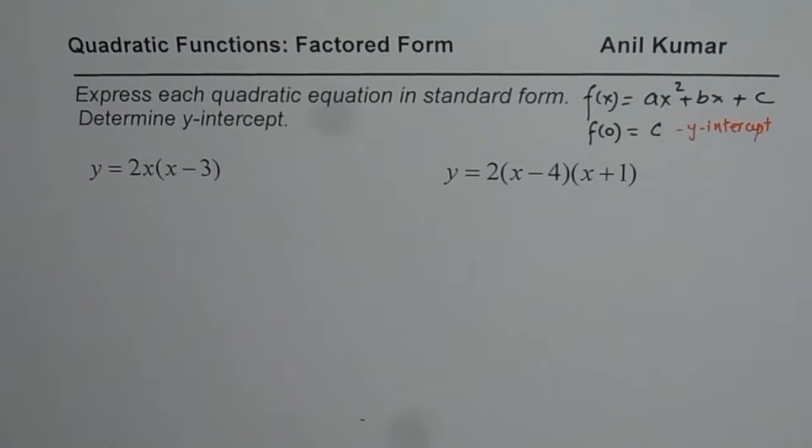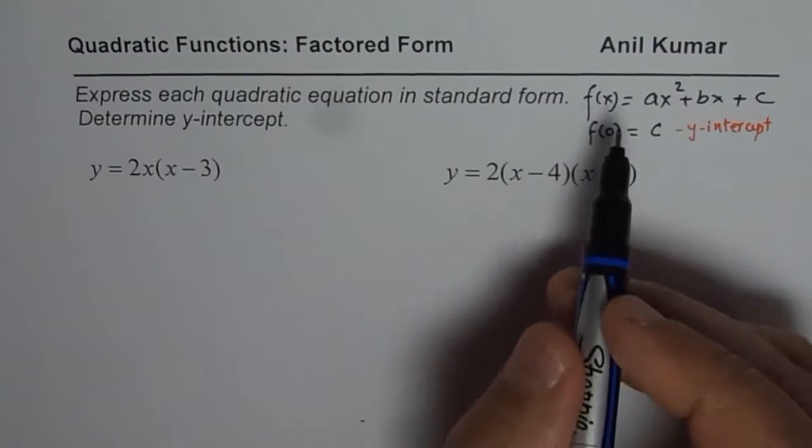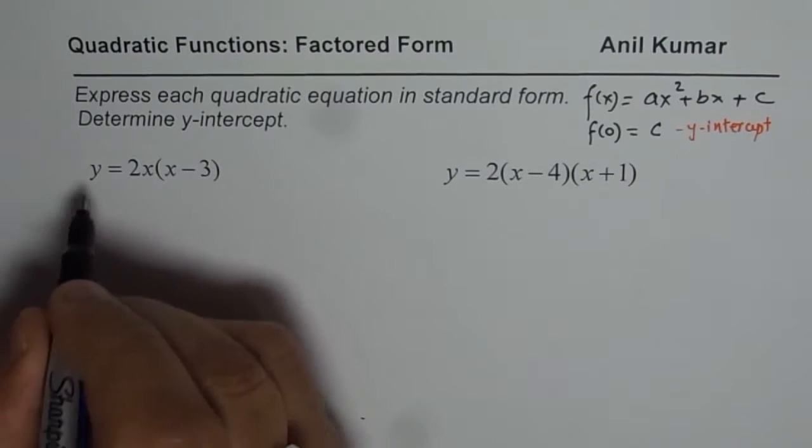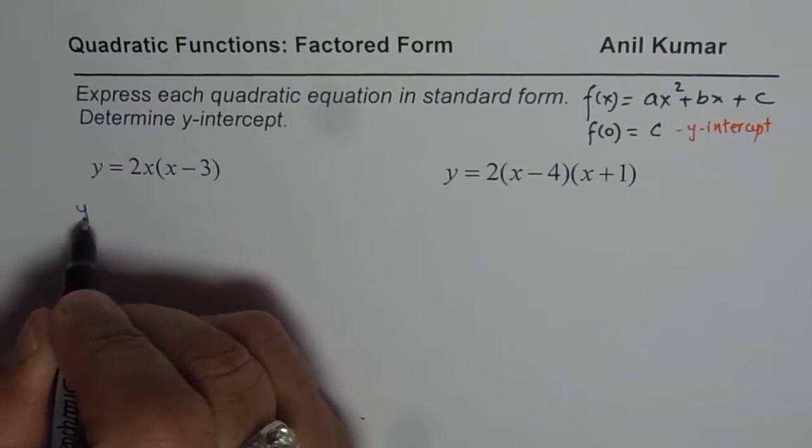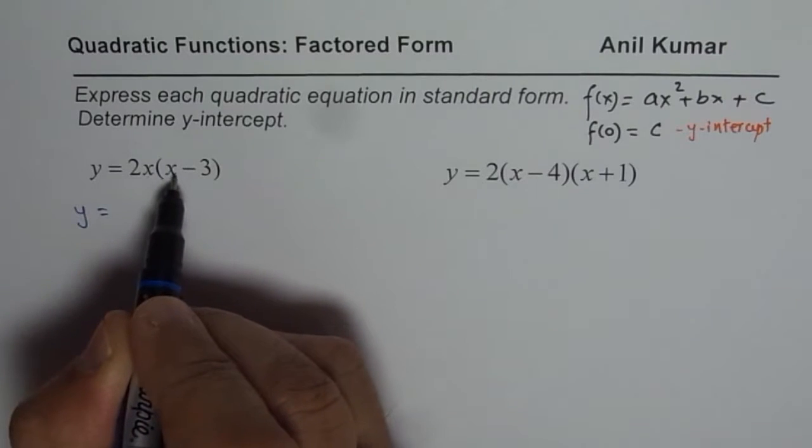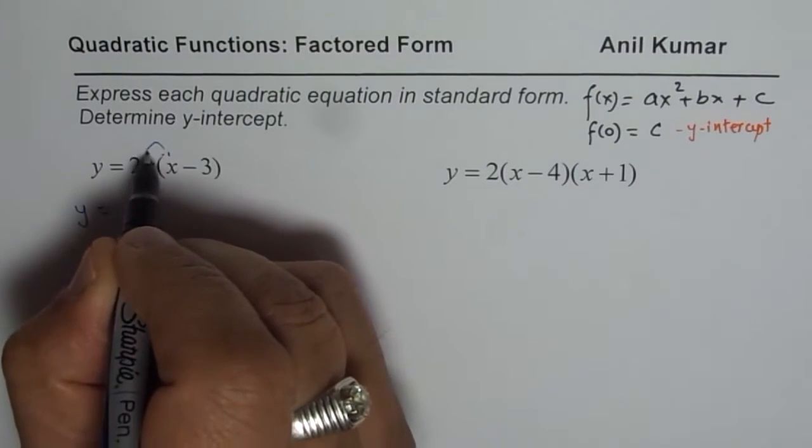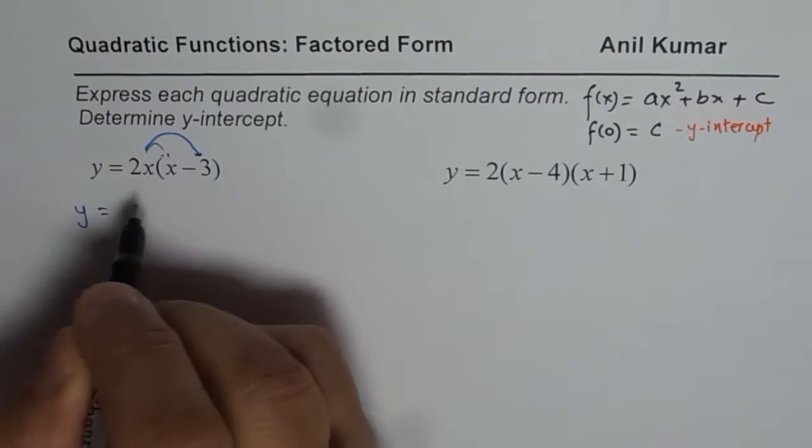So let us expand and find the standard form of these factored form equations. So the first one here is y = 2x(x - 3). You need to multiply it with both the terms inside the bracket.